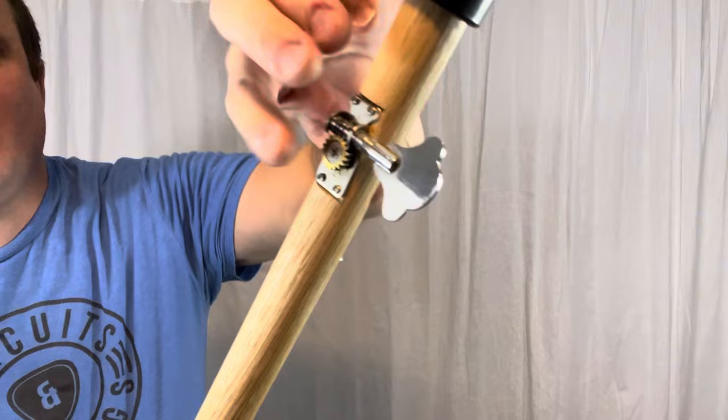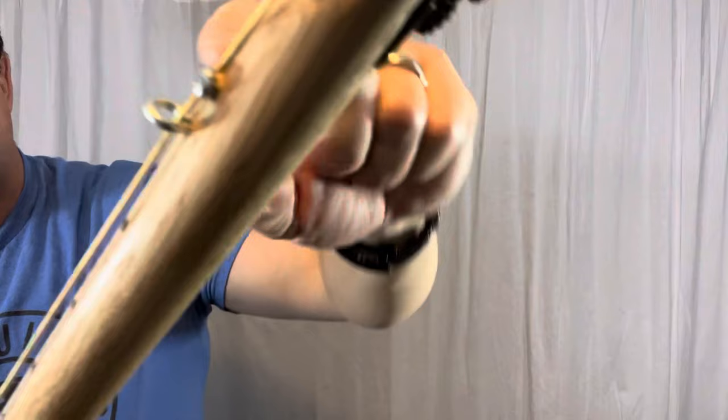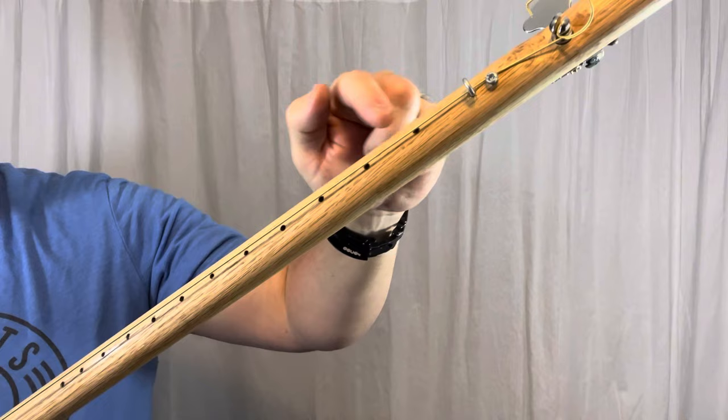We have an ice screw for the nut. This allows you to screw it in or out to adjust the height of the action and then we have a little screw that helps with the break angle. Because this is fretless, I woodburned little dots as references for the first fret all the way to the 12th fret.